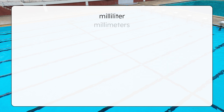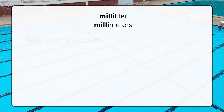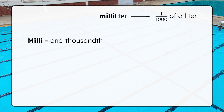We worked with millimeters measuring length in our last lesson. What do you notice about the prefixes of millimeters and milliliters? They're the same. "Milli" means one thousandth, so a milliliter is one thousandth of a liter. That means 1,000 milliliters make up one liter.